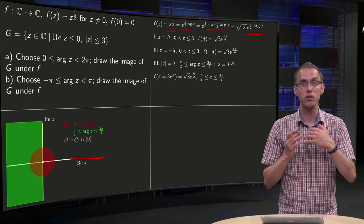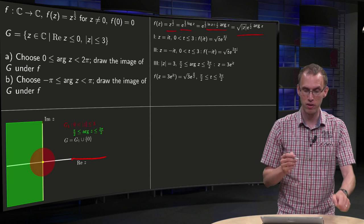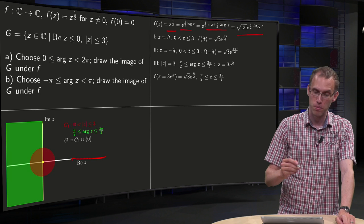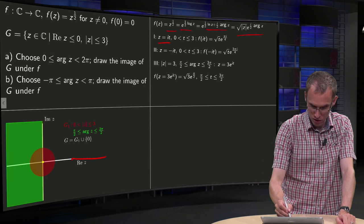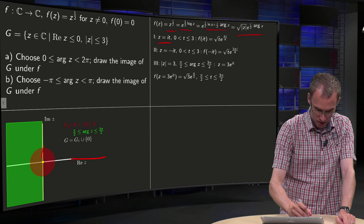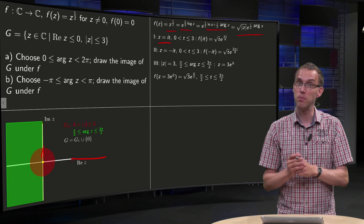Now, how are we going to find the image of our region? Well, you look at the boundaries. So first we take z equals i times t, so that's this part over here, t between zero and three.